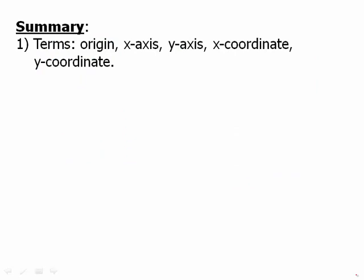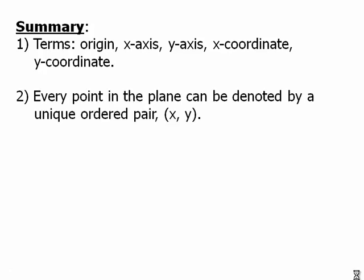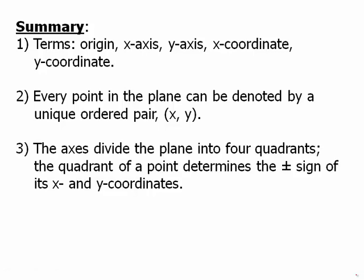In summary, you need to know the terms: origin, x-axis, y-axis, x coordinate, and y coordinate — terms the test will use. It's important to appreciate that every single point in the plane, an infinite number of points, can be denoted by a unique ordered pair, a unique set of x and y coordinates. Finally, the axes divide the plane into four quadrants, and the quadrant of a point determines the positive and negative signs of its x and y coordinates. The test likes to ask about quadrants.